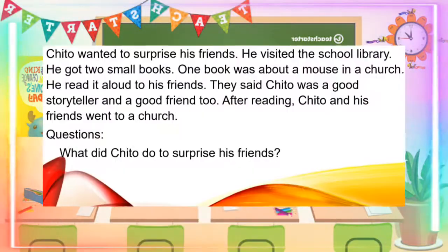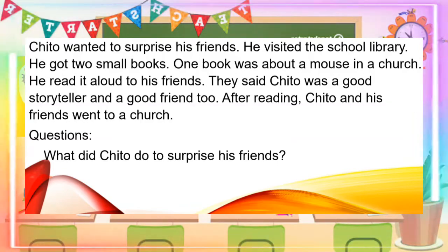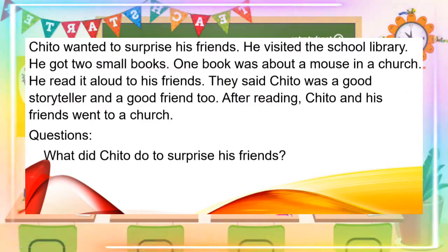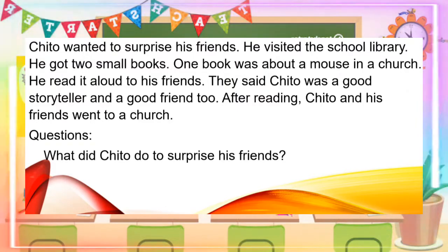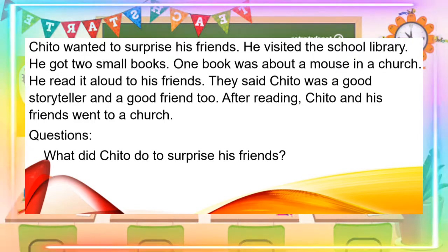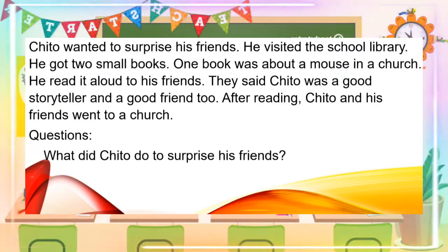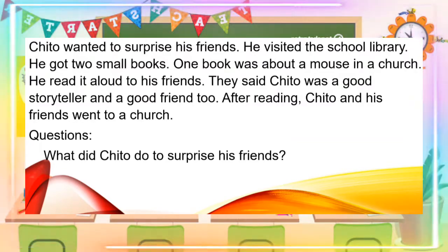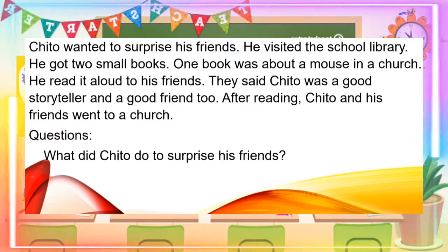Now I know that you know the difference between the common noun and the proper noun. We are going to read a paragraph. I am going to read it for you — please listen. Chito wanted to surprise his friends. He visited the school library. He got two small books. One book was about a mouse in a church. He read it aloud to his friends. They said Chito was a good storyteller and a good friend too. After reading, Chito and his friends went to a church. Who is the main character in our short paragraph? Very good — it is Chito. What did Chito do to surprise his friends? Very good — Chito read a story to his friends.